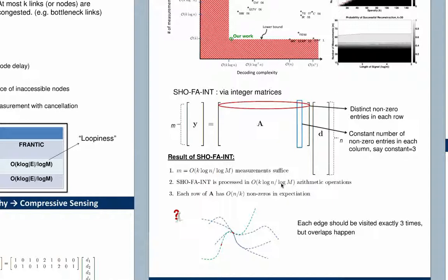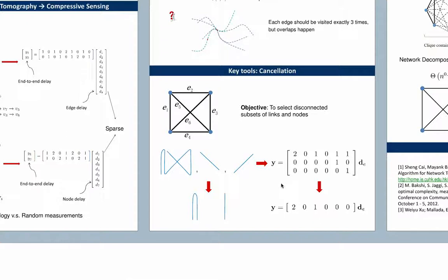Now let's look at how we apply SHOFAR INT to our network tomography problem. We assume that we have an integer-valued measurement matrix using this design. If we start with any arbitrary integer-valued compressive sensing matrix, it's possible that it assigns non-zero values for a measurement corresponding to a path which is disconnected. For example, it's possible that the matrix desires that the measurement output has non-zero weight only corresponding to edges E1 and E3. However, note that there is no connected path that goes only through E1 and E3 — it has to also include other edges.